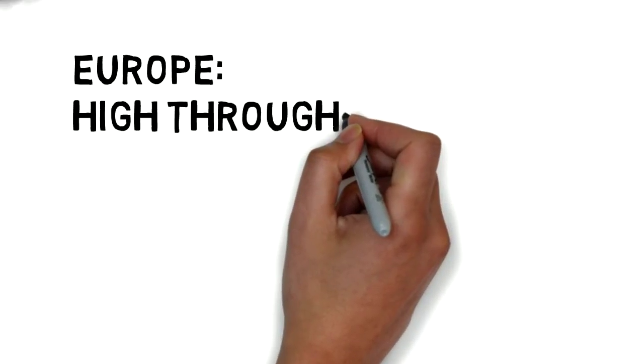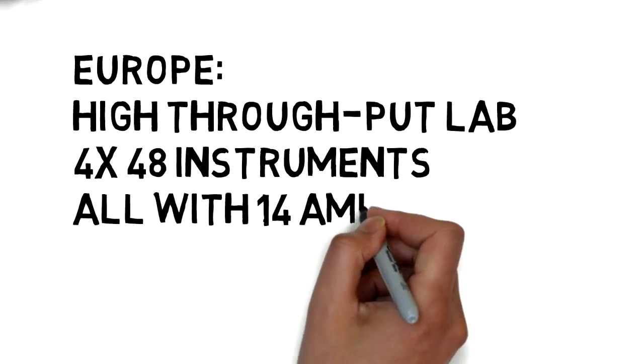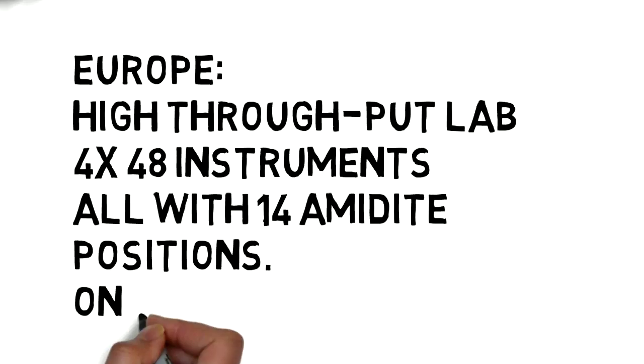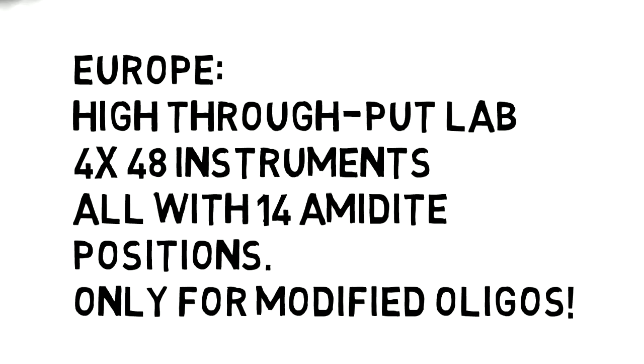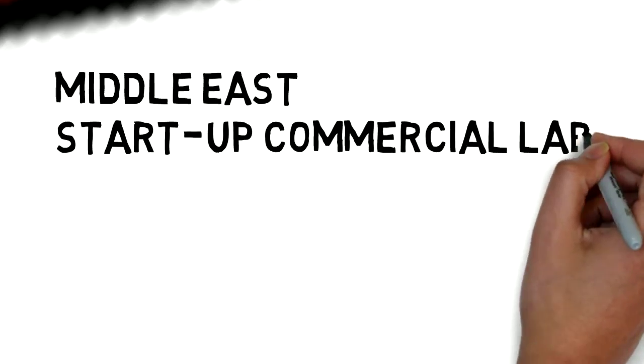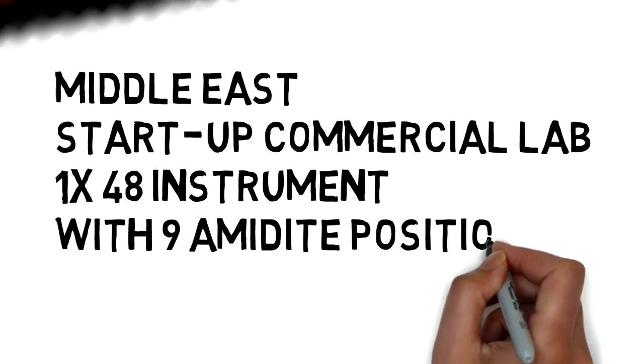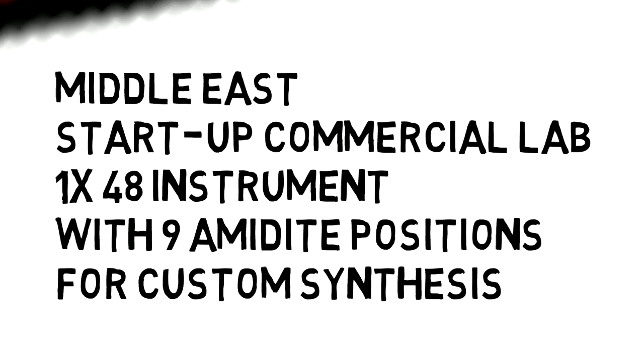In Europe, we have a high-throughput lab with 48 instruments, all with 14 amidite positions. They only use the synthesizer for modified oligos. And in the Middle East, a startup commercial lab has 1 48-channel instrument with 9 amidite positions for custom synthesis.